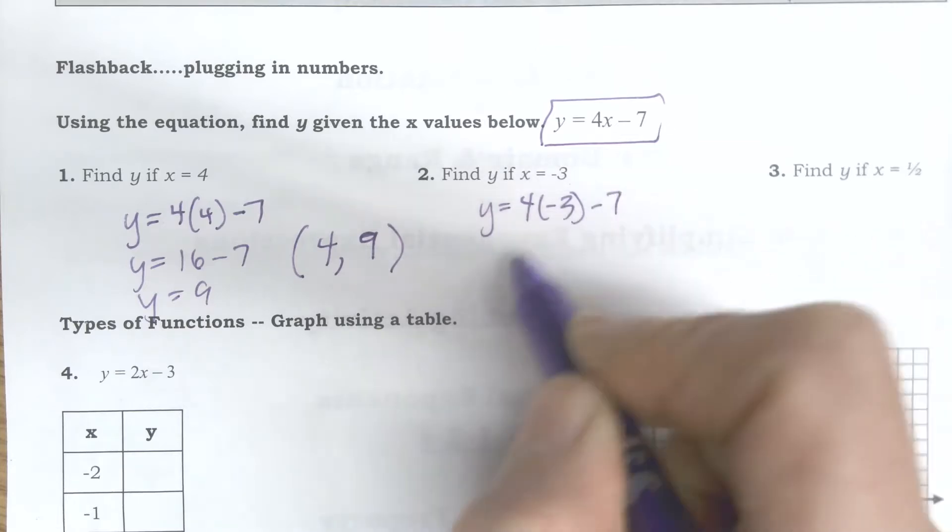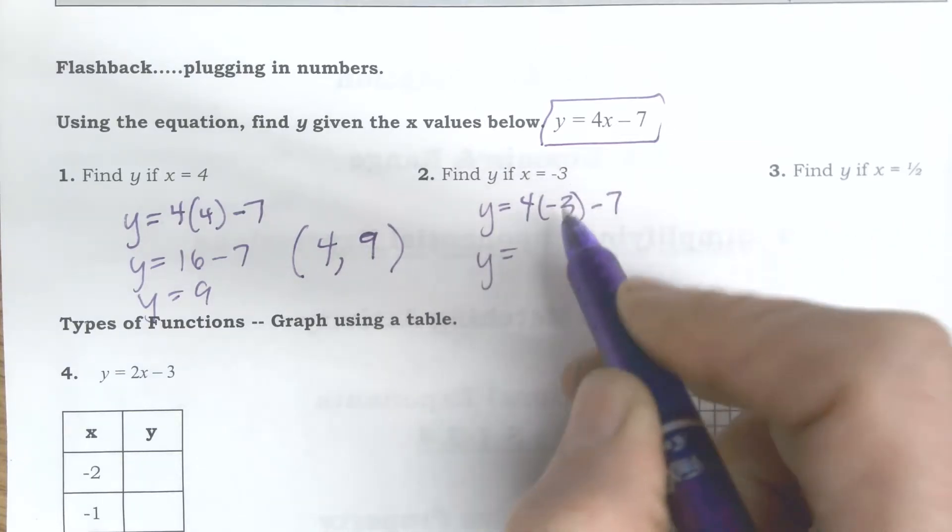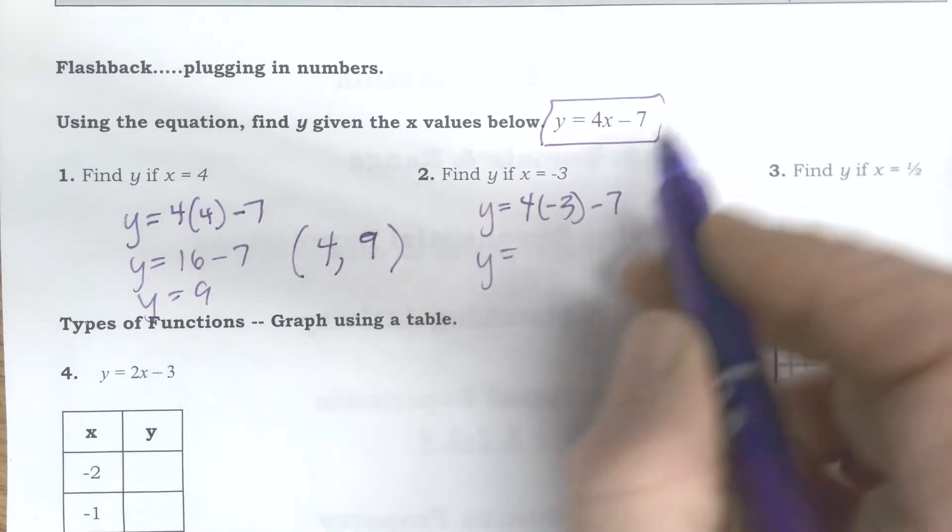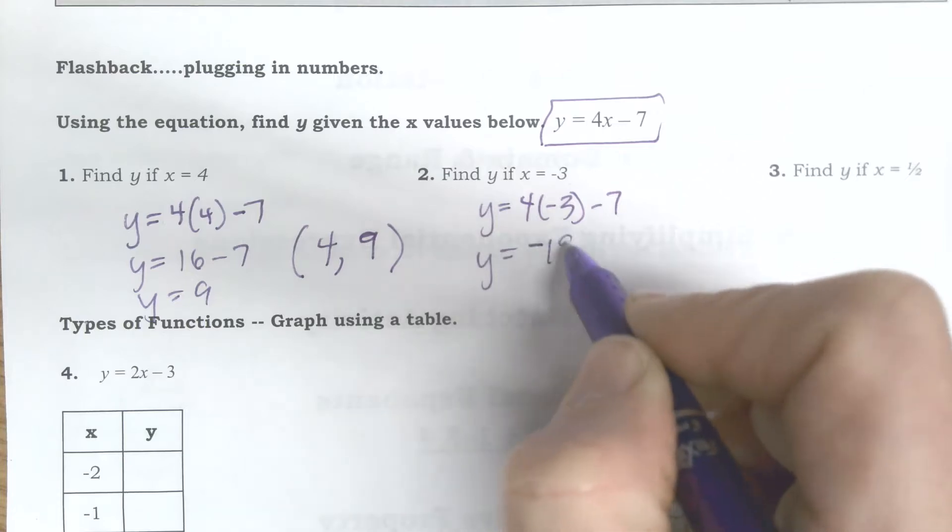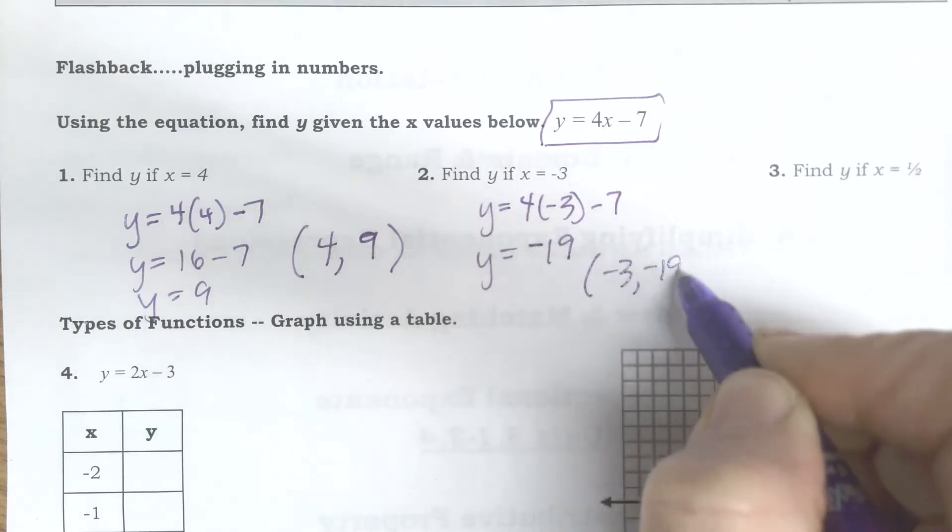And so the rest of these are just kind of plugging that in. 4 times negative 3 minus 7, however you need to do it, do the math. 4 times negative 3 is negative 12 minus 7 is negative 19, so this would be the point negative 3, negative 19.